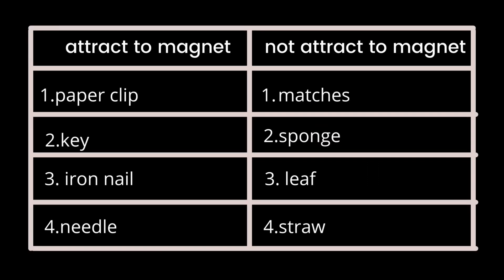So these are the answers. The objects that can attract to magnet are paper clip, key, iron nail, and needle. And the objects that cannot attract to magnet are matches, sponge, leaf, and straw.